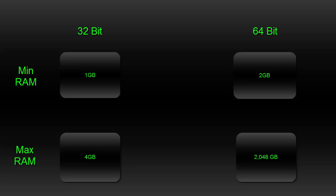If you have 4 gigabytes and cannot upgrade past that, you might as well run a 32-bit operating system. As for 64-bit, we have a 2048-gigabyte limit — we've never come close to that. I've seen very customized computers with 100 to 150 gigabytes of RAM, but that's still nowhere near 2048, or even 1000.